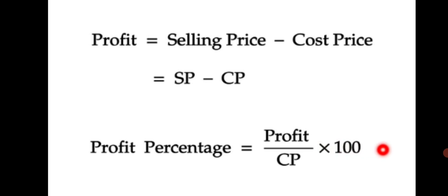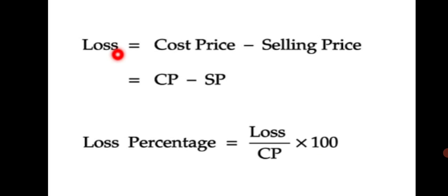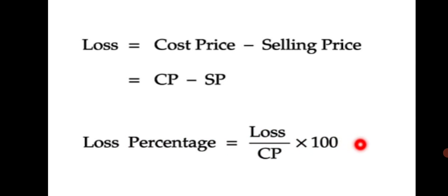What will be Loss% then? Just like Profit%, Loss% will be Loss upon CP multiplied by 100. The formula for Loss is equal to Cost Price minus Selling Price, that is CP minus SP. So Loss% = (Loss / CP) × 100.